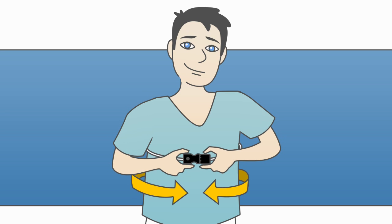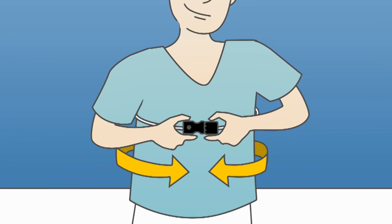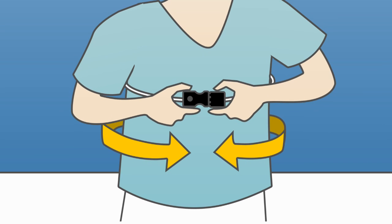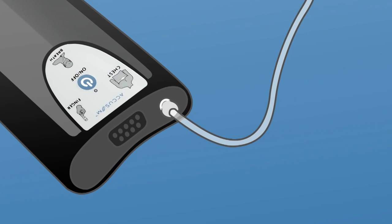First, attach the chest sensor by connecting the black clips around your body. Adjust the belt so it fits snugly under your breasts. Then connect the other end to the AccuSum.